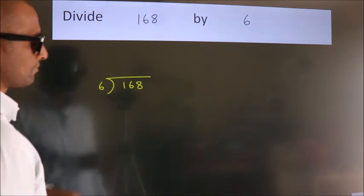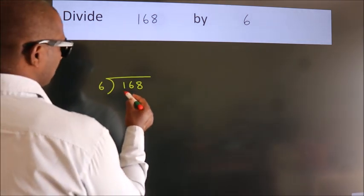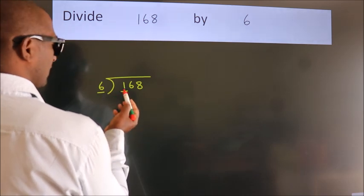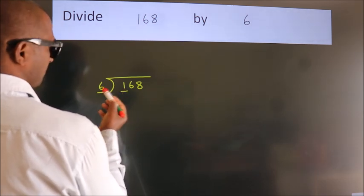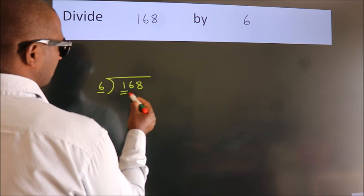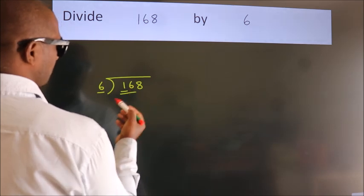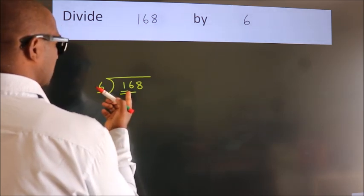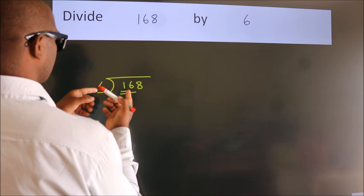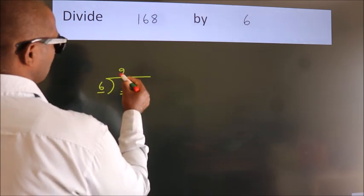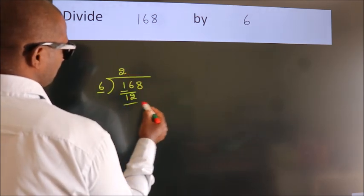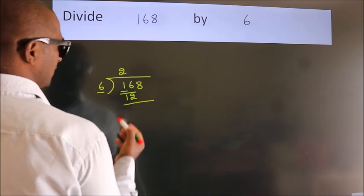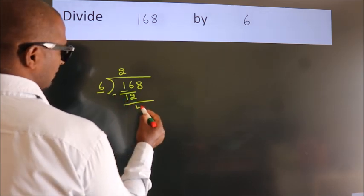Next, here we have 1, here 6. 1 is smaller than 6, so we should take 2 numbers: 16. A number close to 16 in 6 table is 6 twos, 12. Now we should subtract, we get 4.